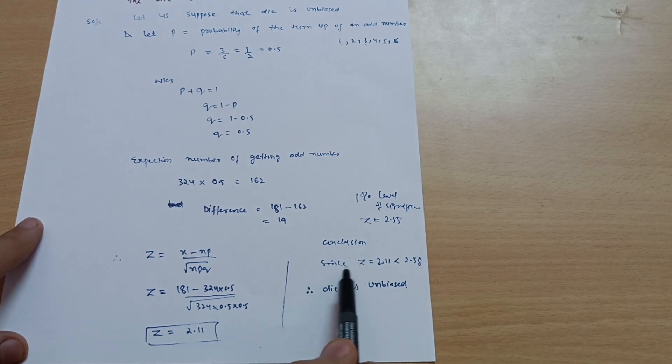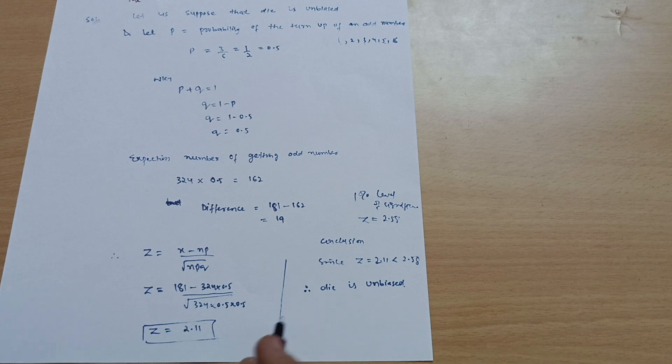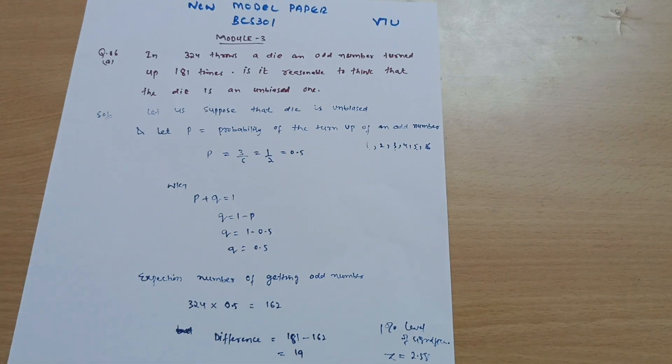So I can conclude that since z is equal to 2.11 is less than 2.58, therefore die is unbiased. So this is the solution for this particular question. Thank you.